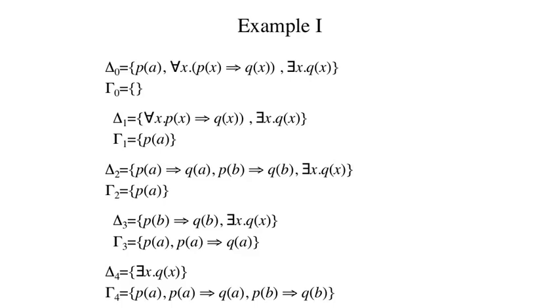On the second step, we remove the universally quantified sentence from delta and add all of its instances to delta. Note that we don't add the instances directly to gamma in general because they might contain nested quantifiers, which then have to be removed as well.